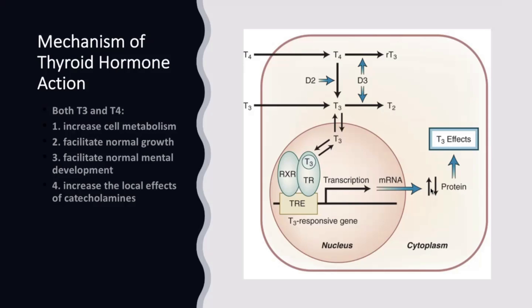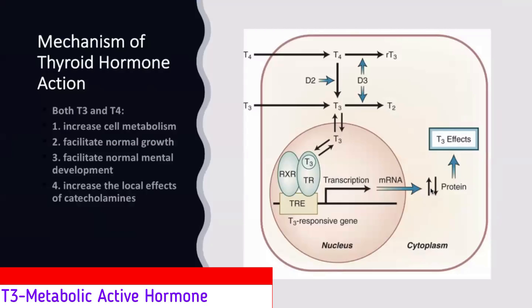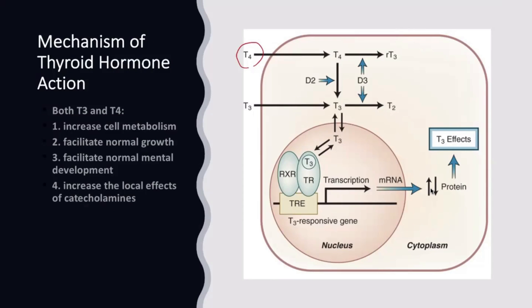T4 is the predominant hormone that enters the cell and is converted into T3 through deiodinase-2 (D2). Another form of T3, that is reverse T3, is also generated by the action of deiodinase-3 (D3). So D2 action leads to T3 generation, and D3 action leads to reverse T3 formation.